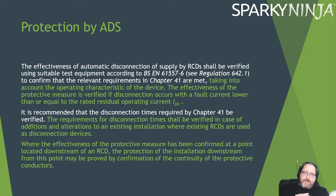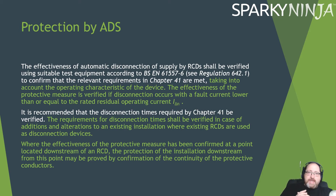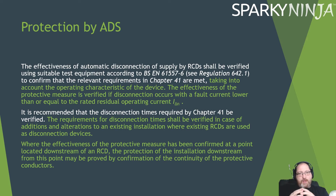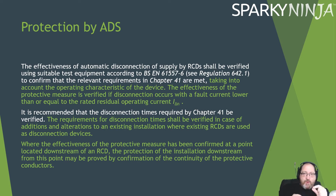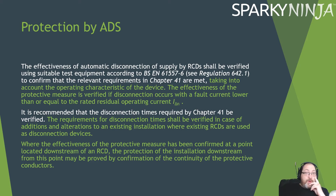The effectiveness of the automatic disconnection of supply for RCDs will be verified using suitable test equipment according to 61557. Take into account the operating characteristics of the device — the effectiveness of the protective measure is verified if disconnection occurs with a fault current lower than or equal to the rated operating current of the device. It is recommended that disconnection times required by Chapter 41 be verified, and this will be verified in case of additions and alterations where existing RCDs are used as disconnecting devices. Where the effectiveness has been confirmed downstream of an RCD, the protection downstream may be approved by confirmation of continuity of protective conductors.